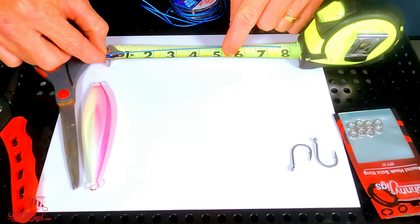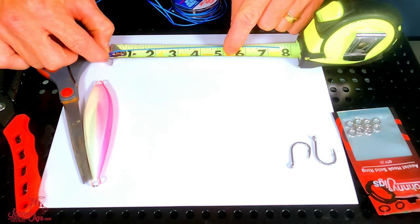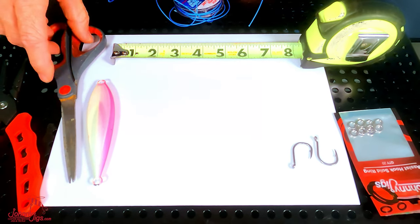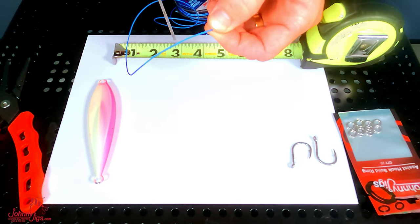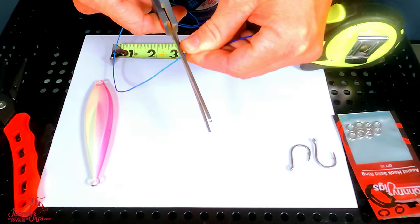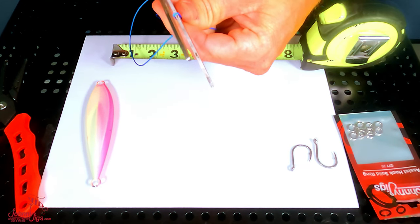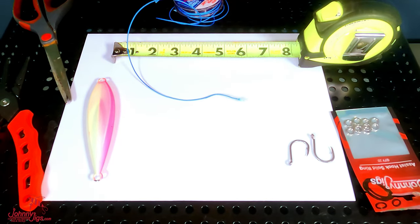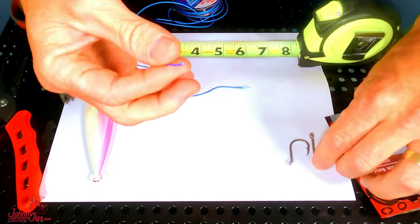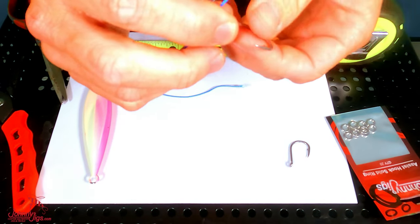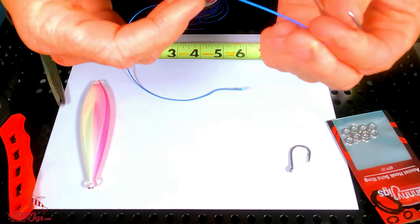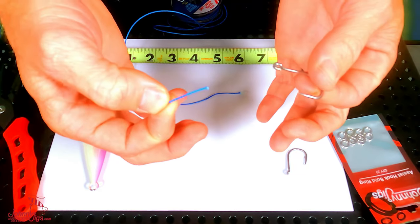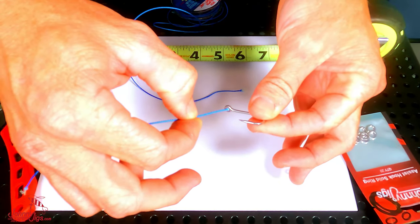So what I'm gonna do first is I'm gonna measure out seven and a half inches, and that's a good starting point. As you dig further into making your own assist hooks, you'll find out what lengths work best for you, but a good starting point would be seven and a half inches. It's tough cord, so you're gonna need some sharp scissors to cut them. Seven and a half inches is a great starting point to tie an assist hook for many size jigs.